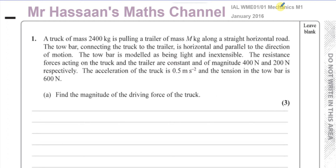It says a truck of mass 2,400 kilograms is pulling a trailer of mass m kilograms along a straight horizontal road. The tow bar connecting the truck to the trailer is horizontal and parallel to the direction of motion. The tow bar is modeled as being light and inextensible. The resistance forces acting on the truck and the trailer are constant and of magnitude 400 newtons and 200 newtons respectively. The acceleration of the truck is 0.5 meters per second squared and the tension in the tow bar is 600 newtons. Find the magnitude of the driving force of the truck.